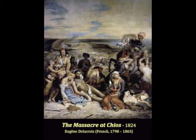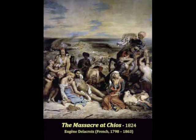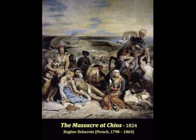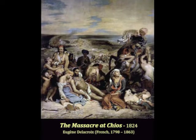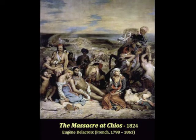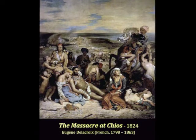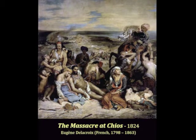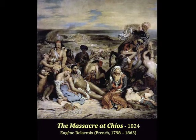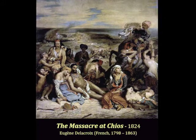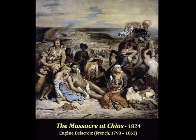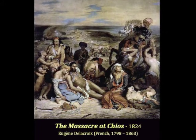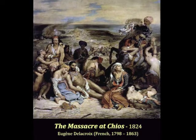Another masterpiece by Eugene Delacroix is this work, Massacre at Chios. Painted in 1824, it creates a romantic scene of the slaughter of tens of thousands of Greeks on the island of Chios by Ottoman troops during the Greek War of Independence in 1822. This painting predates Liberty Leading the People, and in this case Delacroix finds his sympathies on the side of the victims rather than the victors.